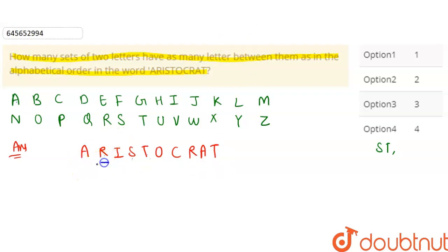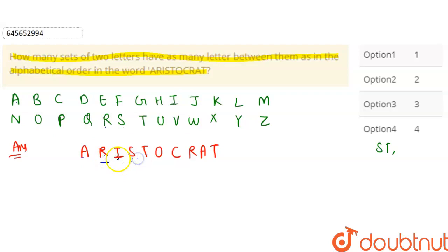Now take the second letter R. Check R and A — between R and A here in the word, how many letters are there? There is one, but in the alphabet between R and A there is not even one. Then R and I — between R and I here, looking, between R and I there are some letters, but not matching. Then R and S — between R and S here, there is not even one letter, so this case is also not possible.